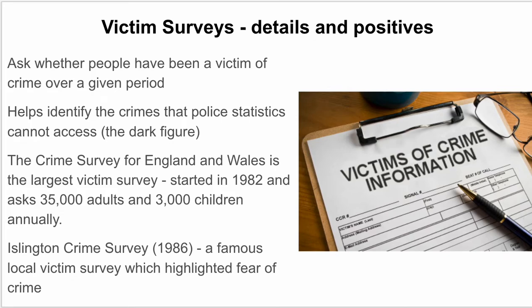Moving on to victim surveys: these ask people whether they've been a victim of crime over a given period, such as the last 12 months. Victim surveys help identify crimes that police statistics can't access — the dark figure of unreported and unrecorded crime. The largest is the Crime Survey for England and Wales, started in 1982, which annually asks 35,000 adults and 3,000 children about their victimisation. Another famous example is the Islington Crime Survey of 1986, which highlighted the fear of crime in a specific area of London.